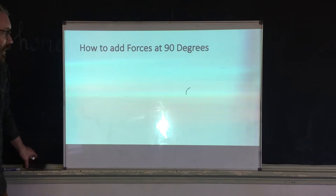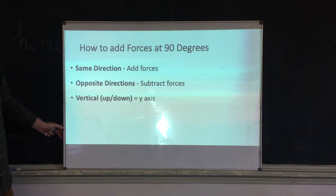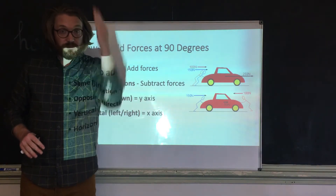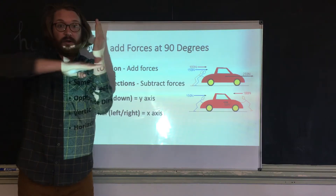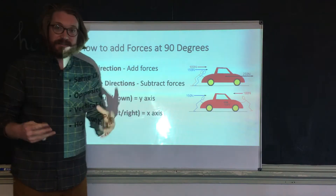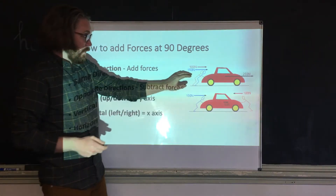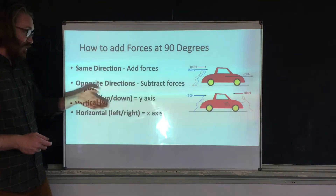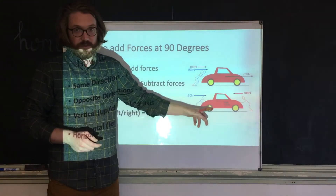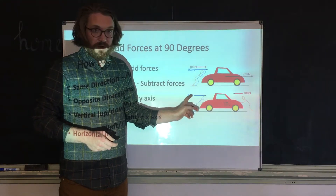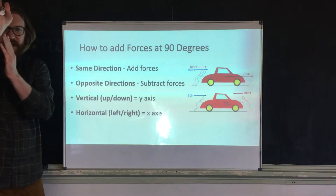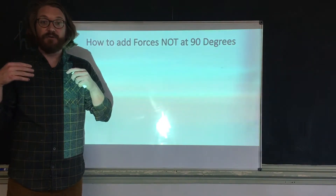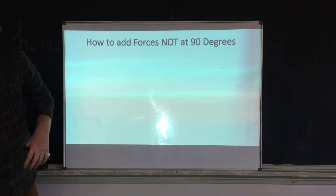Before, we were looking at forces at 90 degrees to each other — forces going either straight vertically or straight horizontally, just up and down or side to side. Adding those is super easy. If forces go in the same direction, like 100 newtons and 150 newtons, you just add them. If they're going in opposite directions, like 150 and 100, you subtract them: 150 minus 100 gives you 50, going in the direction of the bigger arrow. Today we'll see how to add forces when the angles are not at 90 degrees to each other.